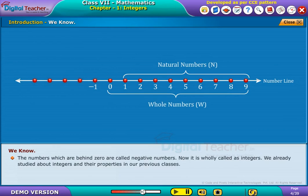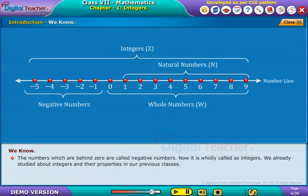The numbers which are behind 0 are called negative numbers. Now, it is wholly called as integers. We already studied about integers and their properties in our previous classes.